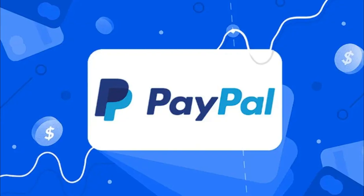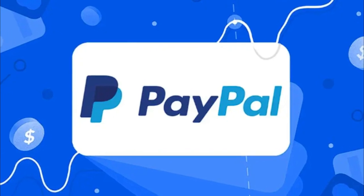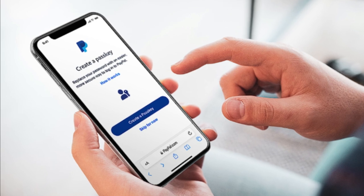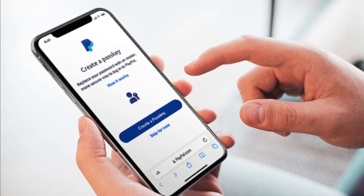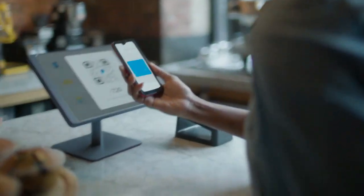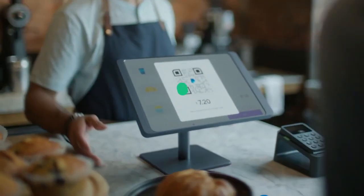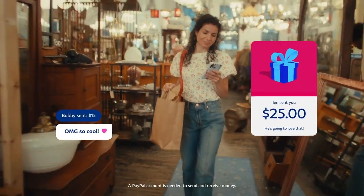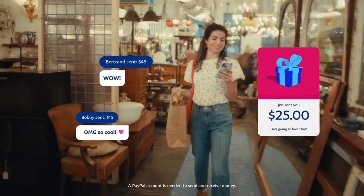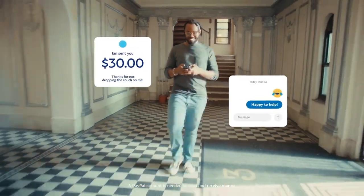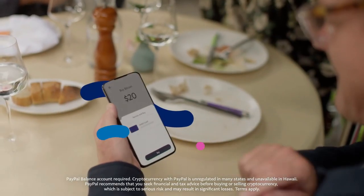1. PayPal – Revolutionizing Online Payments. Elon Musk co-founded X.com in 1999, which later evolved into PayPal. This online payment platform revolutionized the way people conducted e-commerce, offering a safe and convenient method for online transactions. Musk's role in PayPal laid the foundation for the modern digital payment systems that are now an integral part of global financial infrastructure.